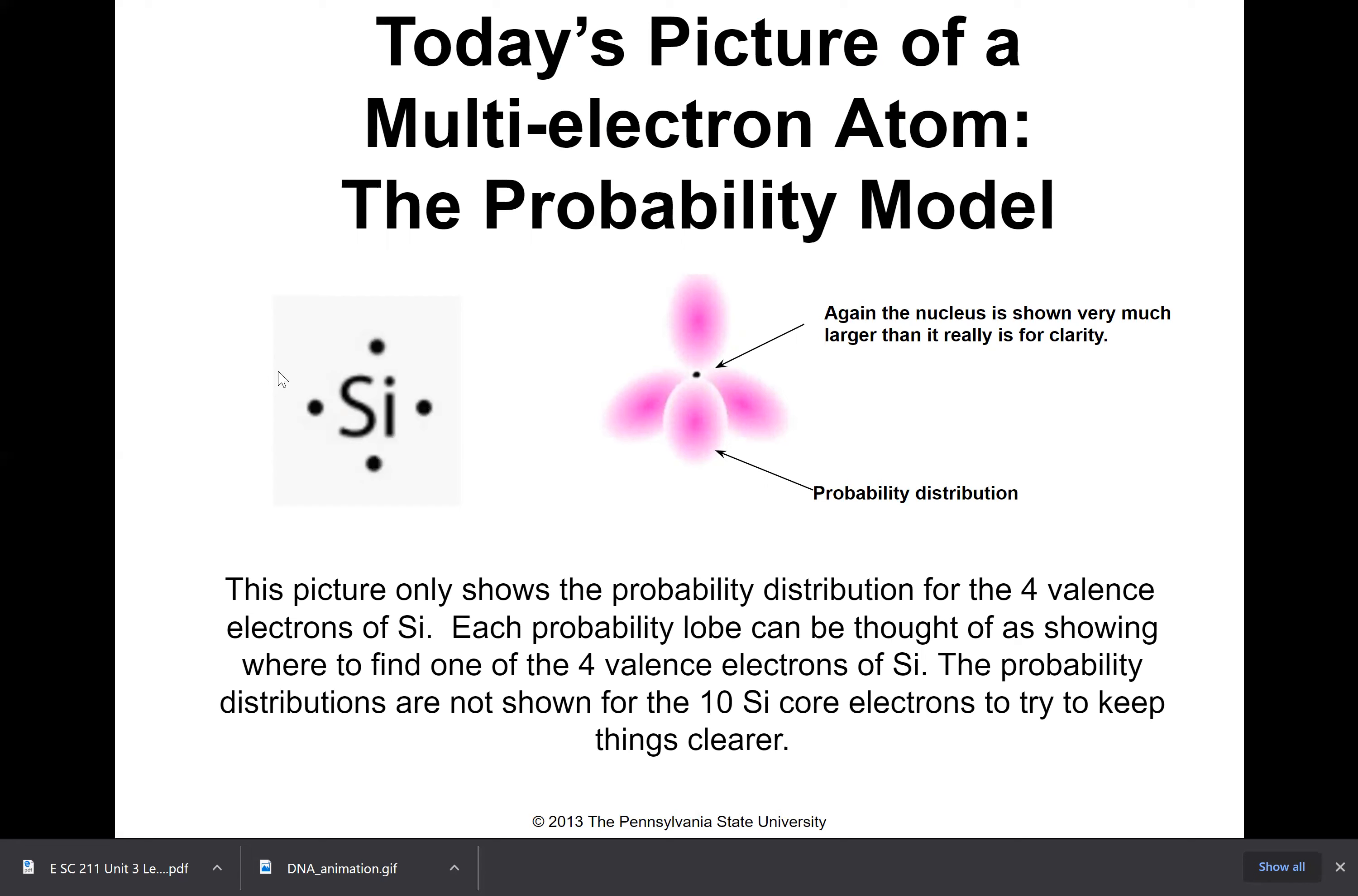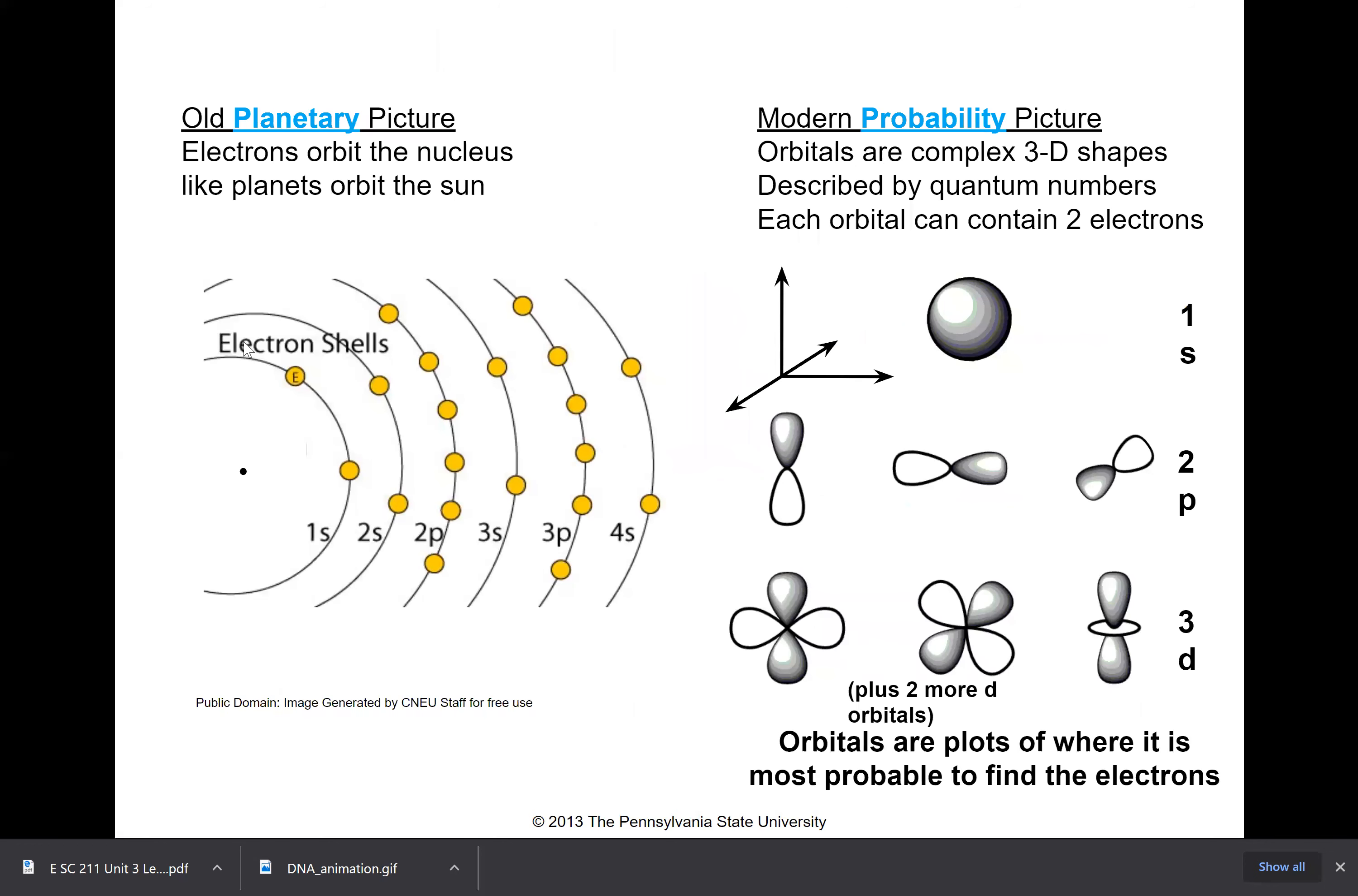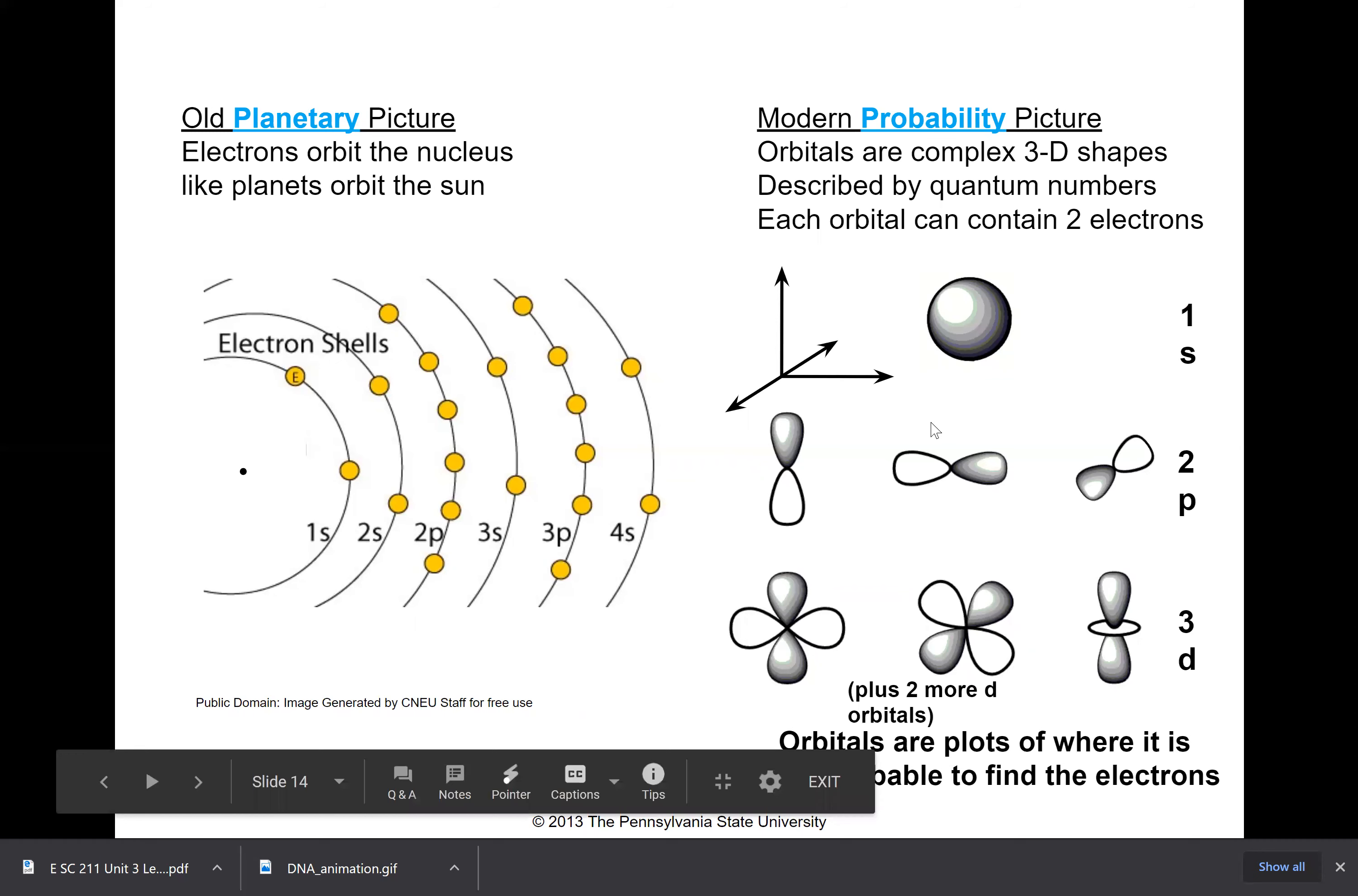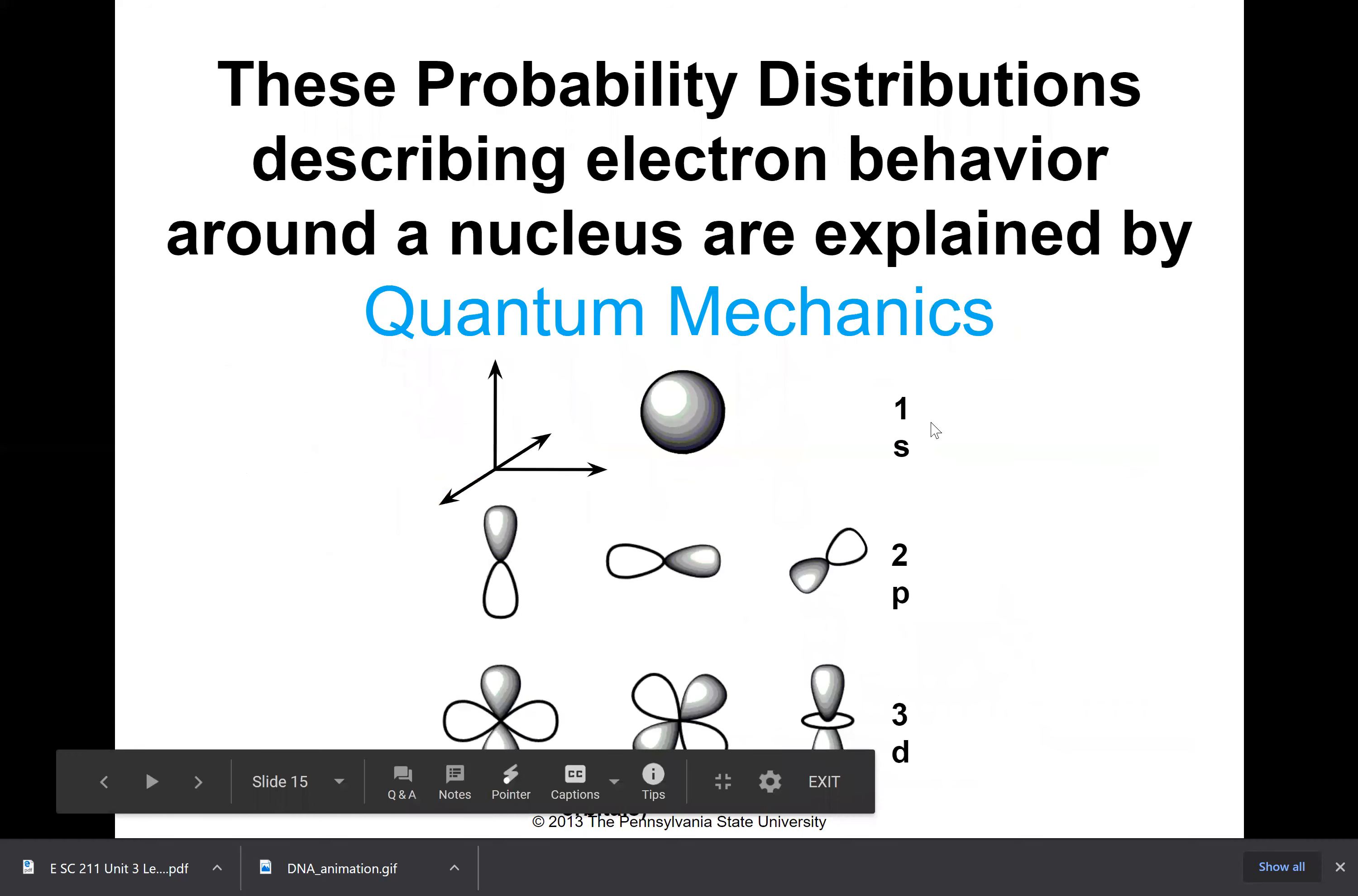In chemistry and in a lot of places, this is even hard to draw, right? So we often use as a simple form this Lewis dot structure. This Si, the silicon symbol, represents the nucleus plus the core electrons, and then the valence electrons are these dots around the outside of the silicon symbol. Four lobes here for the valence electrons, four dots here for the valence electrons. This is just a slide comparing the planetary picture to the modern probability picture. In the probability picture you have these different shapes, much more complex.